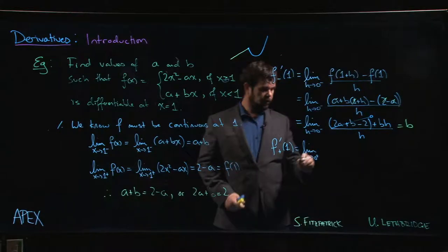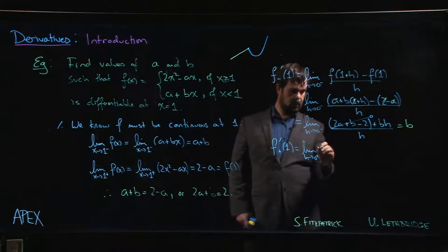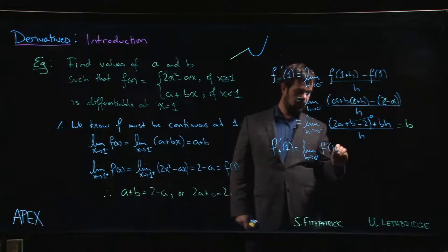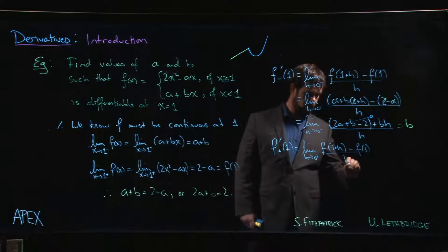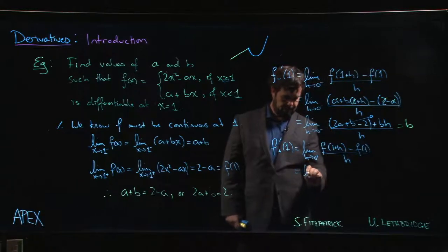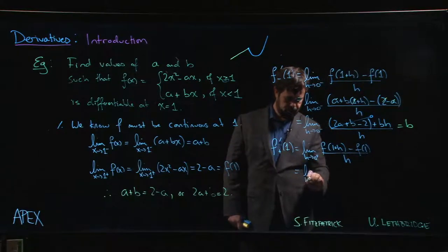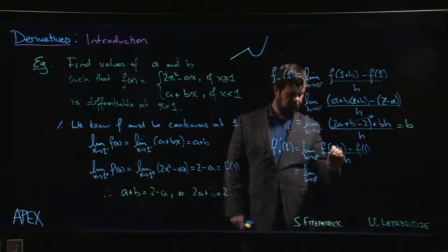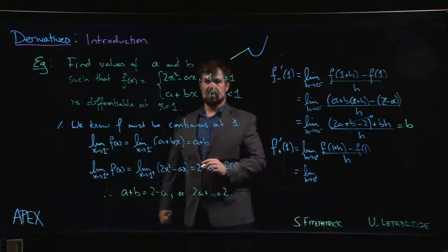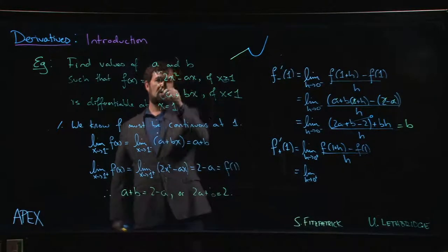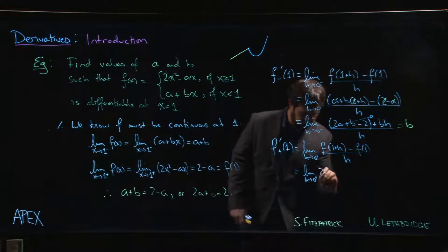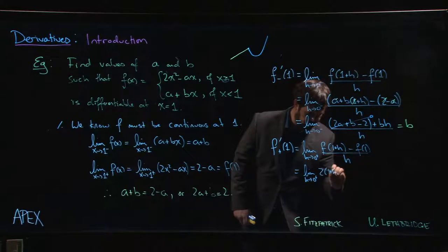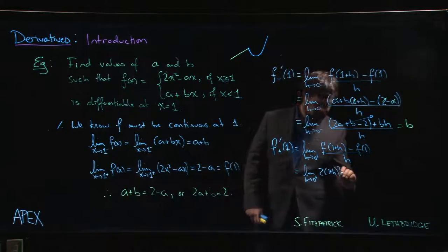for the right-hand derivative. Okay, so we have [f(1+h) - f(1)]/h. And since h is positive, 1+h is bigger than one, that means we need to use this expression here. So we have 2(1+h)² - a(1+h)